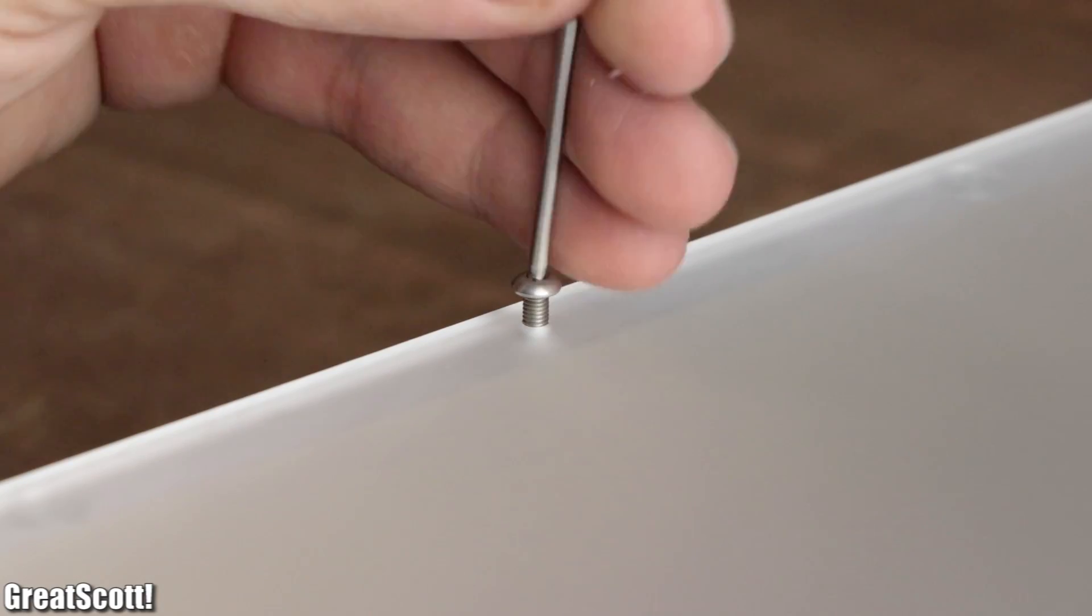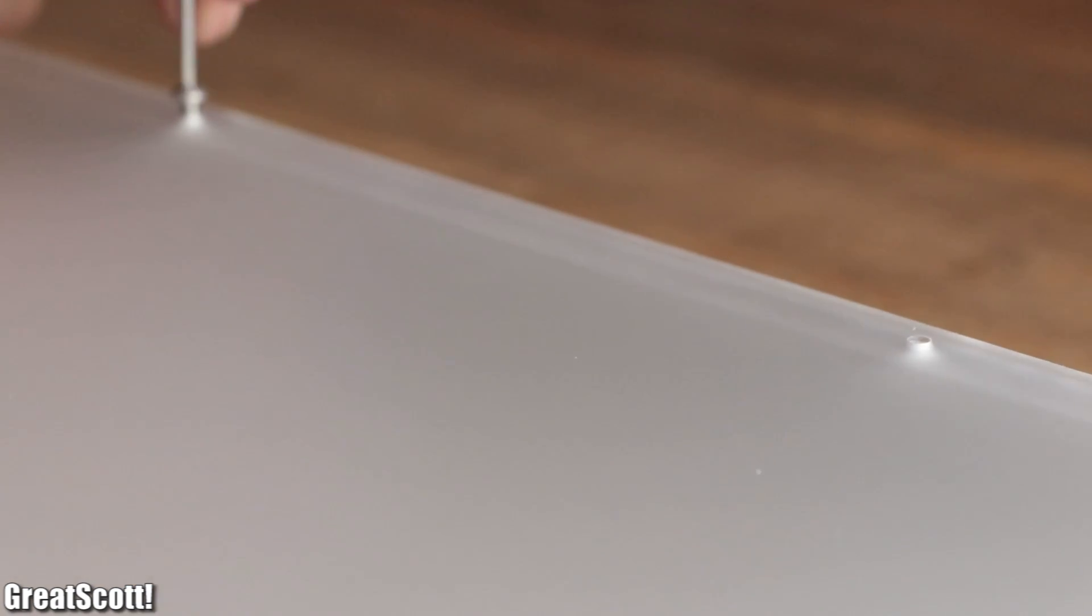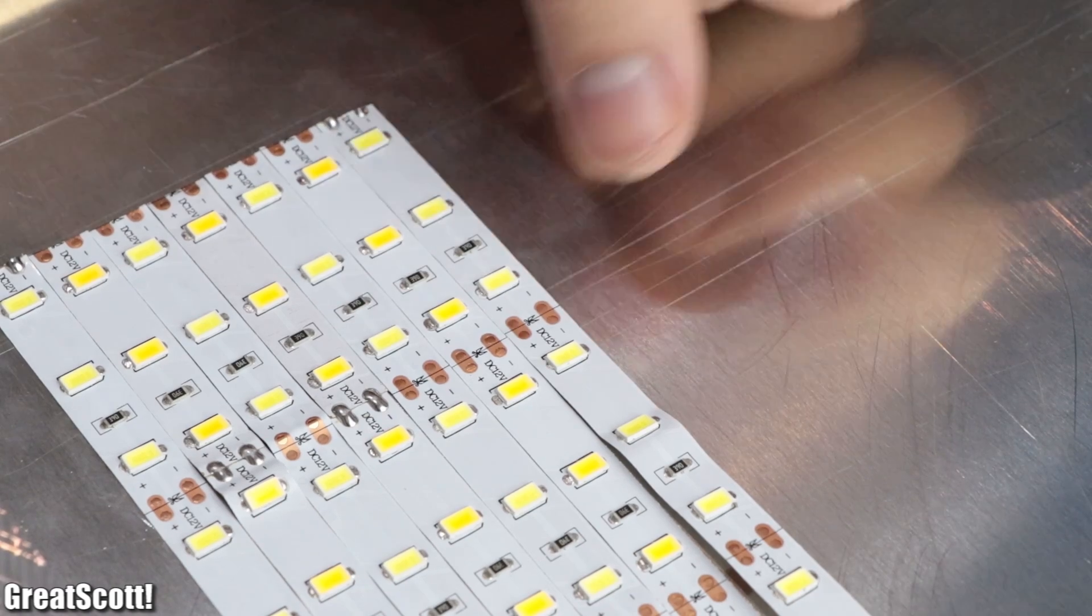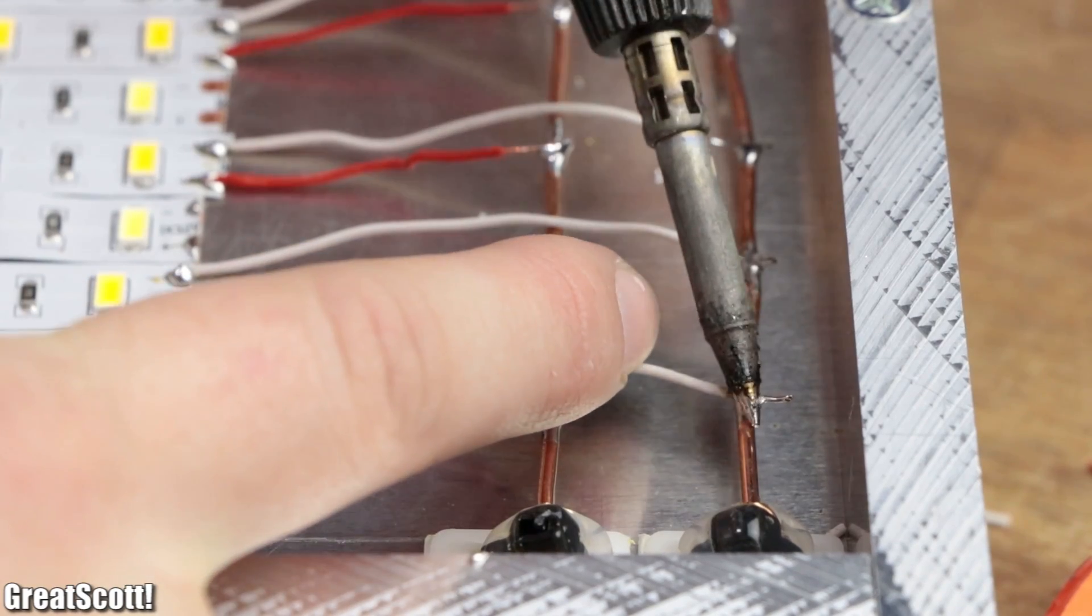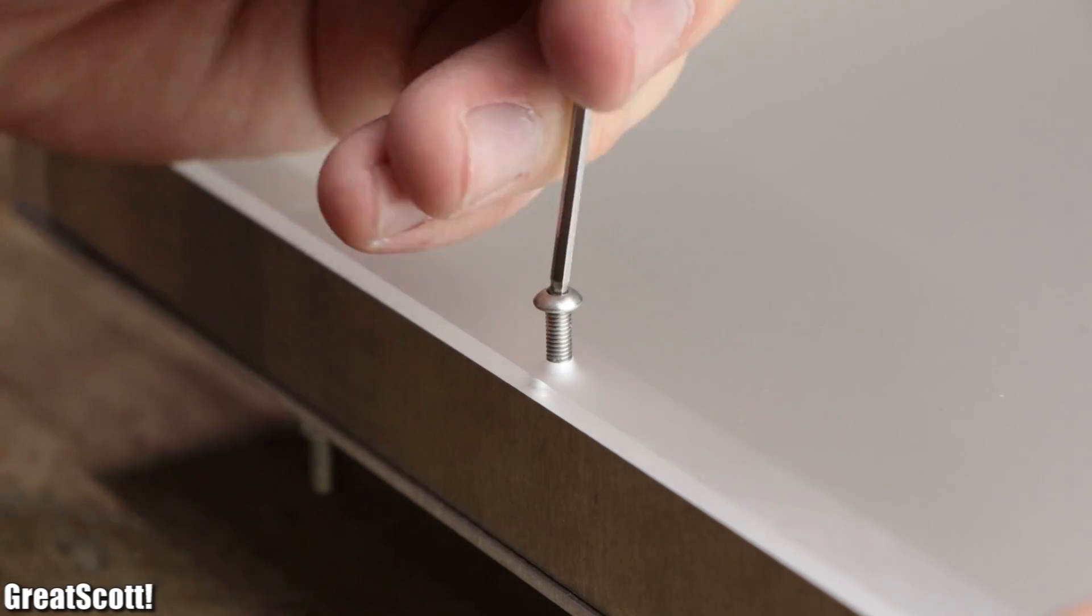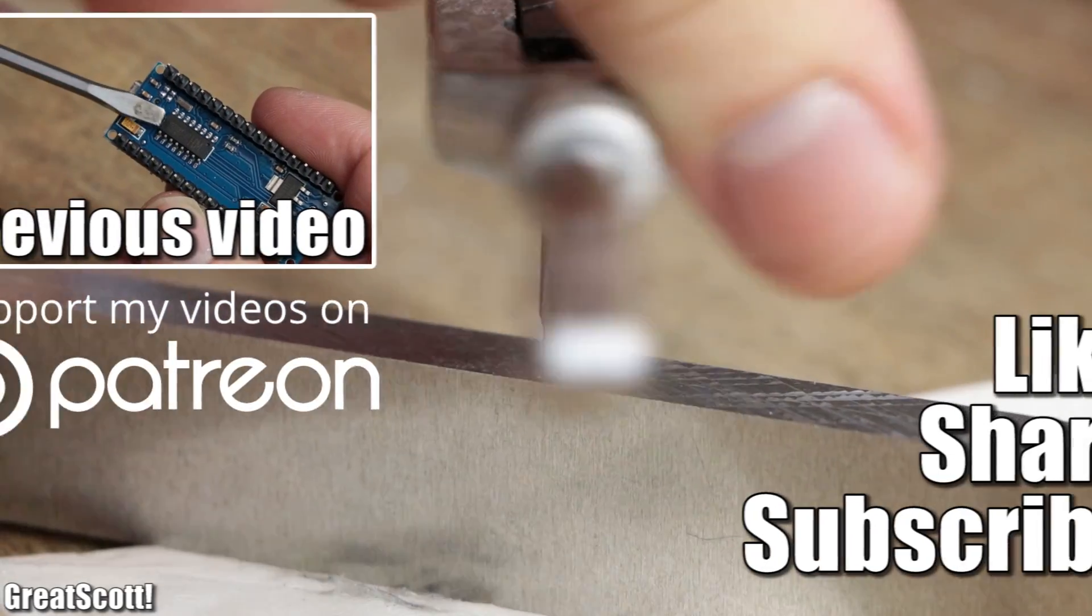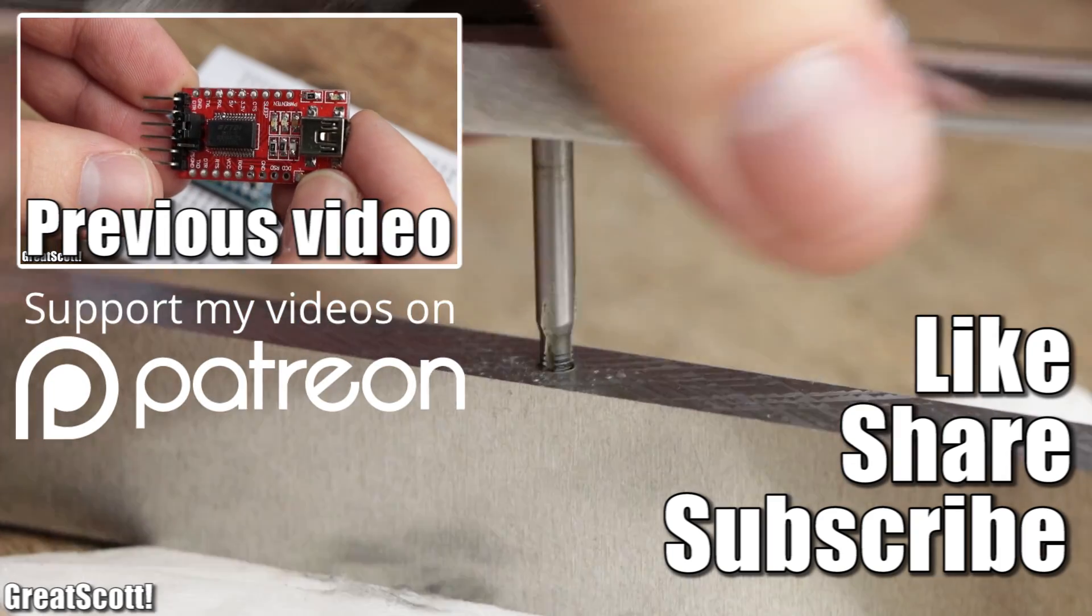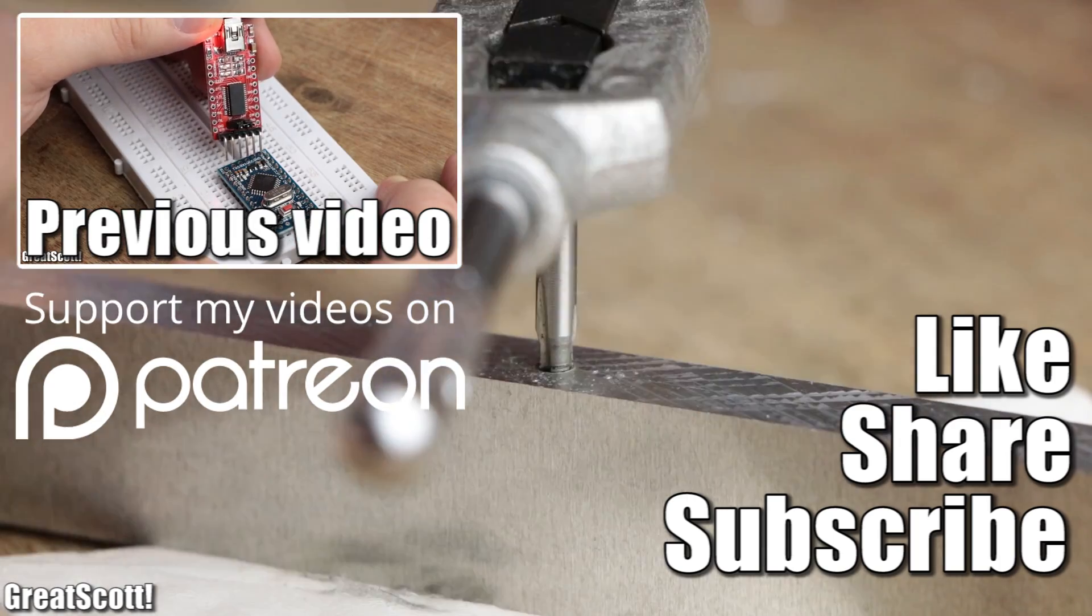At this point, we could use small M3 screws to attach the acrylic glass to the metal construction and thus finish the mechanical build. But since we still need to place the LEDs inside the panel and wire it all up, we might as well leave it open for Part 2. Until then, don't forget to like, share, and subscribe. That would be awesome. Stay creative and I will see you next time with Part 2.